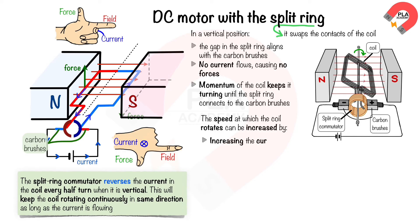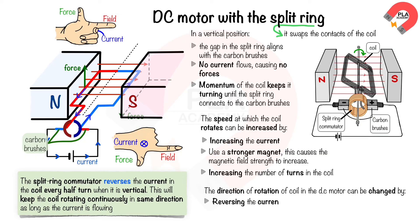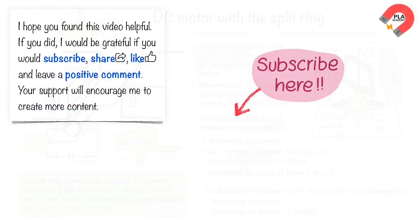The speed at which the coil rotates can be increased by increasing the current, using a stronger magnet to increase the magnetic field strength, or increasing the number of turns in the coil. The direction of rotation of the coil in the DC motor can be changed by reversing the direction of the current or reversing the direction of the magnetic field by reversing the poles of the magnet.